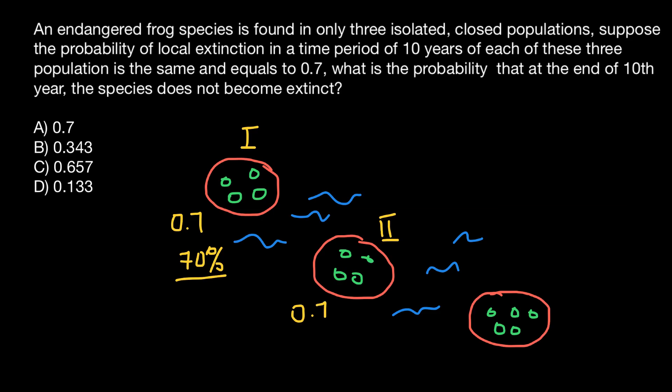In math we usually, when we solve probability problems, we use numbers between 0 and 1. So that's why I'm going to use 0.7 instead of 70%. And the same is true for the third island.